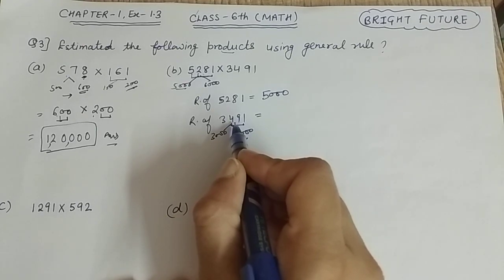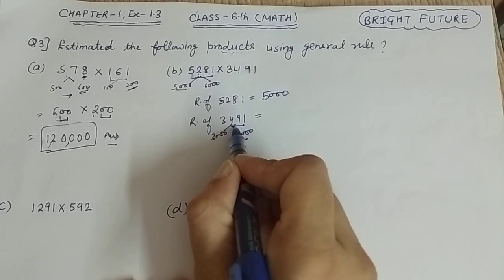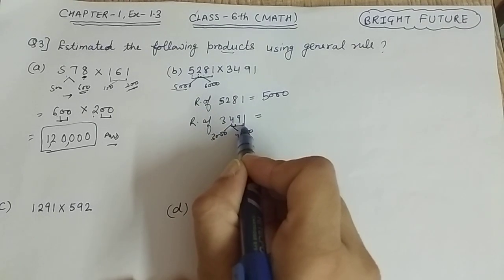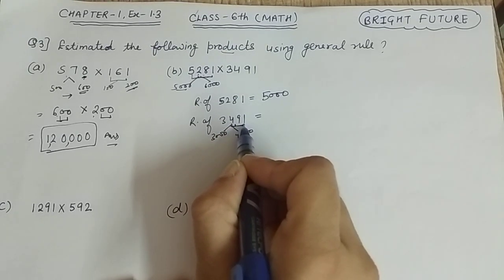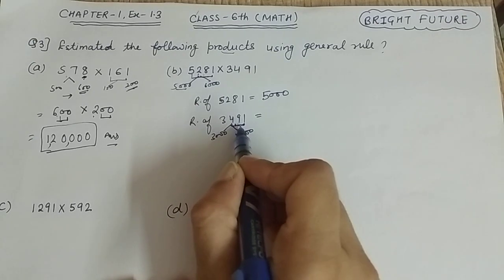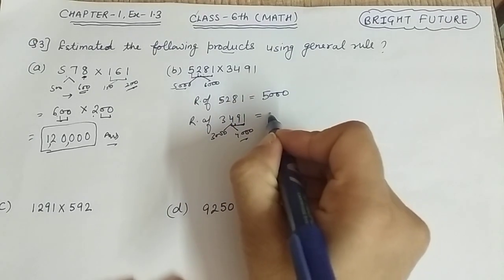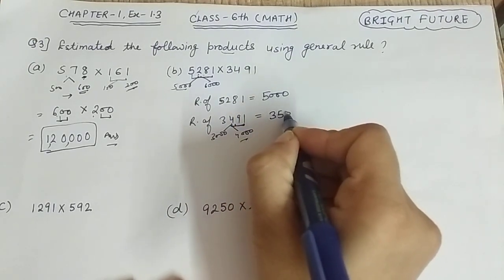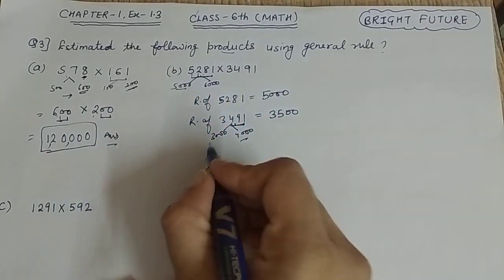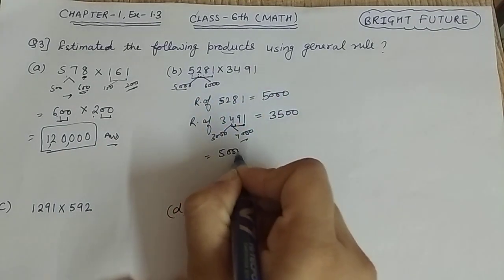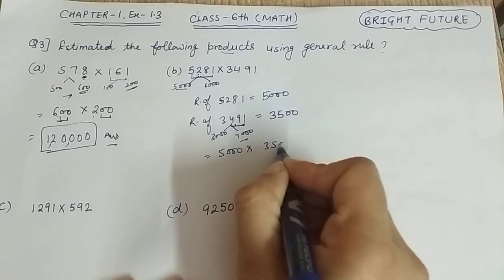The rounding off will be 3,500 in terms of hundreds. Now our multiplication is 5,000 times 3,500. We will multiply this. Here we will count the zeros because we are rounding off. Here we have 5 zeros: 1, 2, 3, 4, 5.